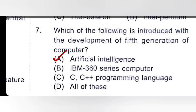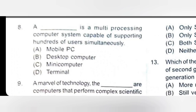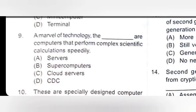Number 8: which is a multiprocessing computer system capable of supporting hundreds of users simultaneously? Mobile PC — not a mobile phone. Desktop computer — not this. Minicomputer — C is the right option. This can handle more than one user simultaneously. Computers that perform complex scientific calculations speedily are supercomputers, means B is the right option.